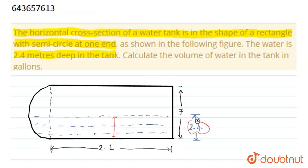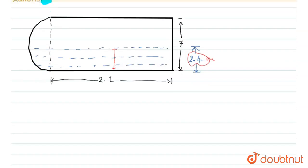Calculate the volume of water in the tank in gallons. Here in the figure it is also given that the height of this rectangle is 7 and the length is 2.1 meters. So friends, as we know the